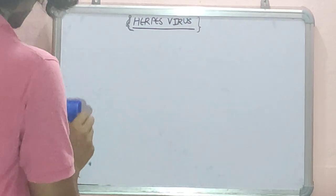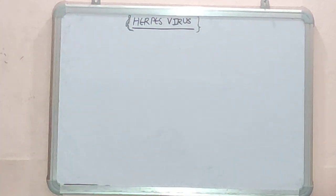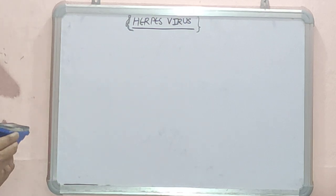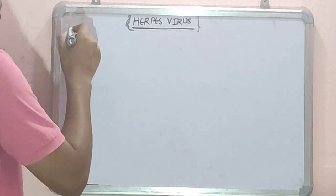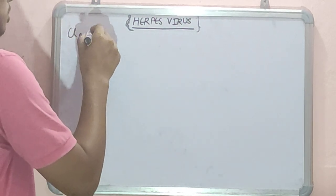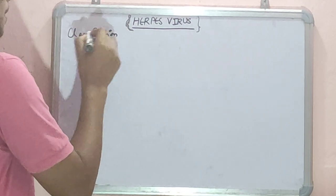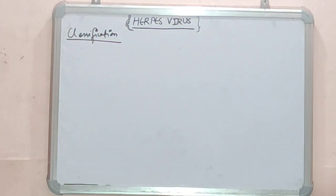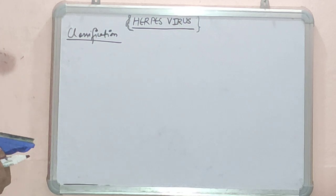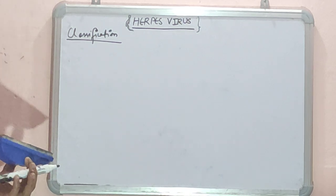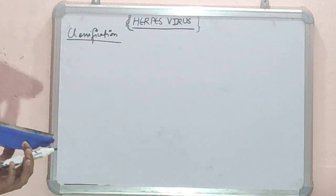Now coming to the classification of Herpes Viruses — what it is and what it can cause, how dangerous it is. There are eight human Herpes Virus species known today. They are formed and present in different organisms, plants, and animals.